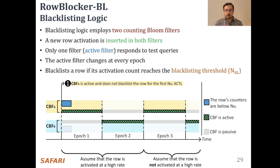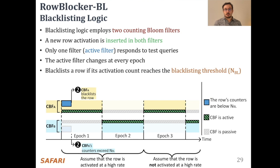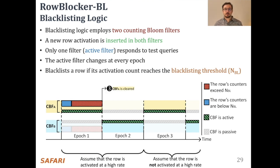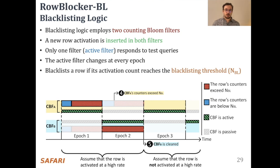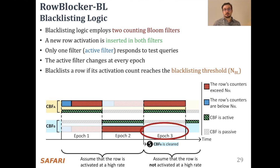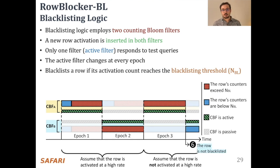Row Blocker blacklists a row if the row's activation count reaches the blacklisting threshold, called NBL. A blue bar shows that the row's activation count is below the blacklisting threshold and therefore not blacklisted yet. However, at timestamp 2, the row's activation count reaches NBL and the row is blacklisted, indicated by a red bar. At timestamp 3, the active filter CBFA is cleared and CBFB becomes the active filter for epoch 2. Since CBFB remembers the high activation rate from epoch 1, it keeps the row blacklisted until the end of epoch 2. Meanwhile, at timestamp 4, the row's activation counters in CBFA exceed the blacklisting threshold again. At the end of epoch 2, at timestamp 5, CBFB is cleared and CBFA becomes the active filter again, immediately blacklisting the row because its counters reached NBL at timestamp 4. Assuming the row is no longer rapidly activated during epoch 3, its counters in CBFB remain below NBL and the row is no longer blacklisted starting from timestamp 6.